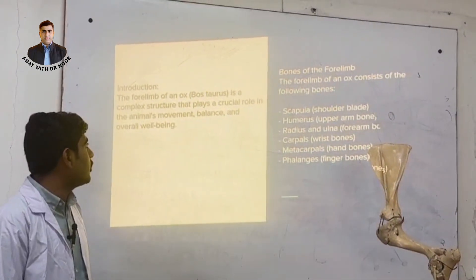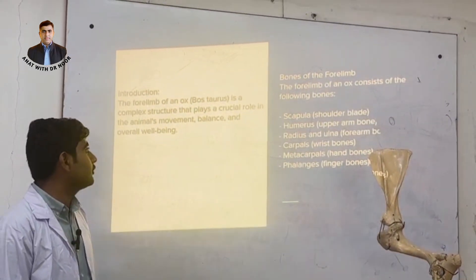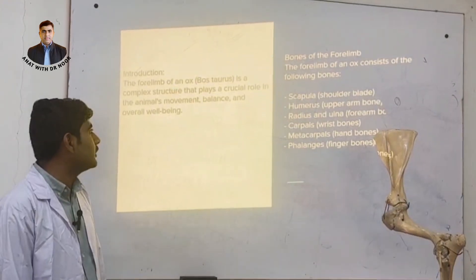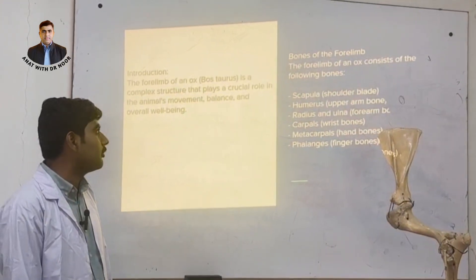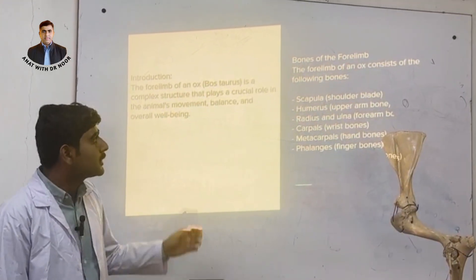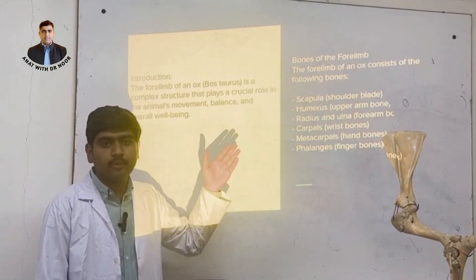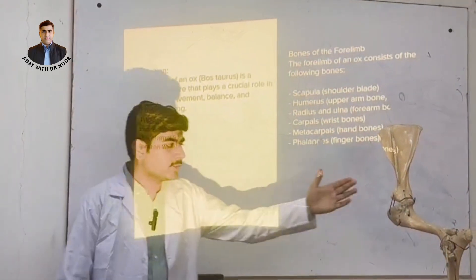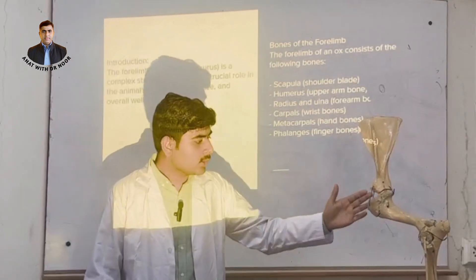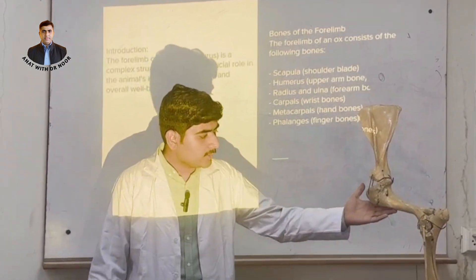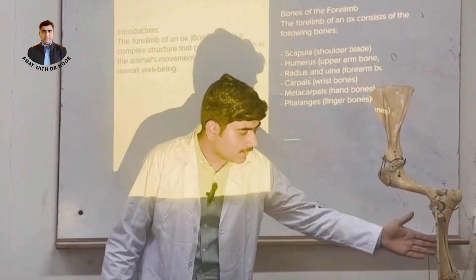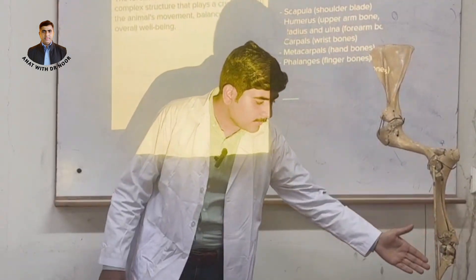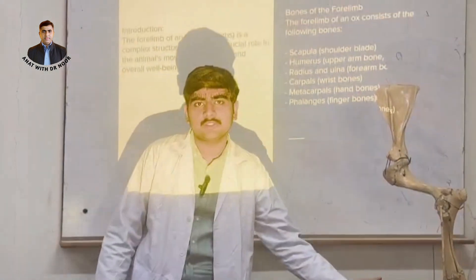Introduction: the forelimb of ox is a complex structure that plays a crucial role in the animal's movement, balance and overall well-being. Bones of the forelimb include scapula, humerus, radius and ulna, carpal, metacarpal and phalanges.